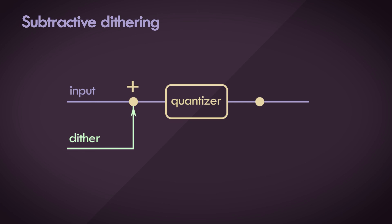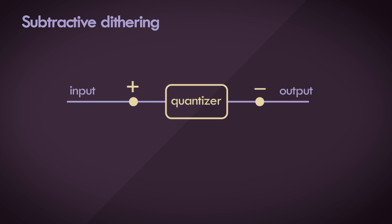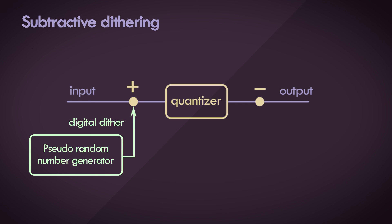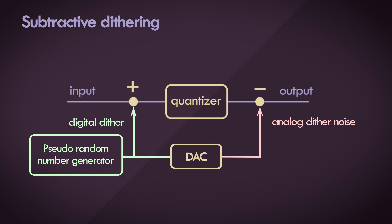Subtractive dithering, on the other hand, is an extension of the existing technique where we take the same dither signal and subtract it from the output, which would lower the noise floor quite a bit. Though this seems like a great solution, practically implementing it is harder than it seems, because we need to transmit the dither signal to the output beyond the quantization boundary without having the dither signal itself be quantized. One way to do this is to use a pseudo-random number generator with an agreed-upon seed value, followed by a DAC as the source of analog dither noise, making it possible to transmit discrete values instead of analog noise — making dither subtraction more realistic.